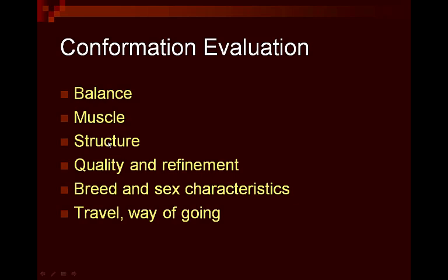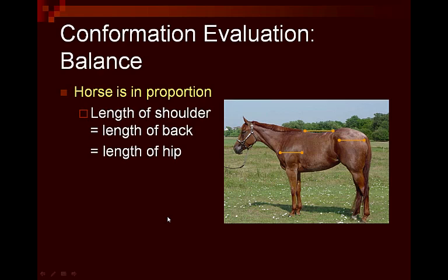We'll start with balance, because basically balance is looking to see if the horse is proportioned together. It really is where you should start when looking at any group of horses to determine which one is the most balanced. We want to see how proportionate that horse is — whether the length of the shoulder is relatively equal to the length of the back, and if this is also relatively equal to the length of the hip, going from the point of the hip to the point of the buttocks. The back goes from the point of the withers to the end of the loin.